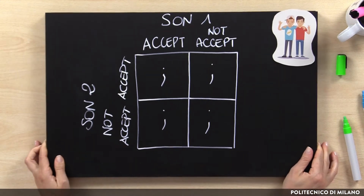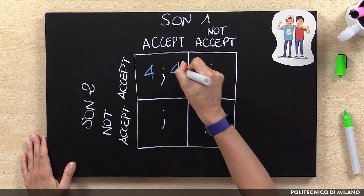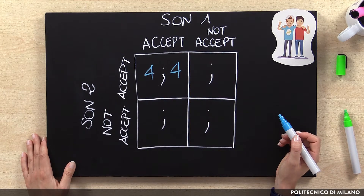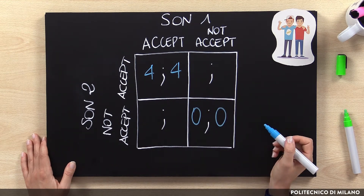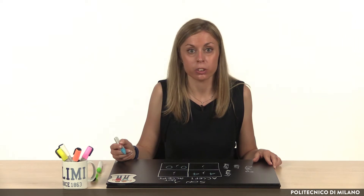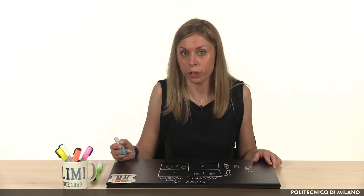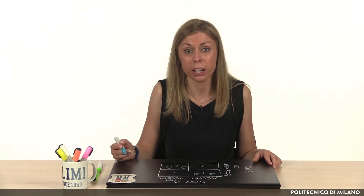With this new perspective, in case of agreement the payoff for both sons is 4 euros, because 4 are the euros received from the father but 0 is the differential revenue. In case of non-agreement it is always 0, because they neither receive money from the father nor have a differential revenue compared to the brother. In the two intermediate situations, the son that is not accepting has an overall value of 5: 3 euros received from the father plus 2 euros of differential value. The son that is accepting has an overall value of minus 1 euro: 1 euro received from the father minus 2 euros of differential value.